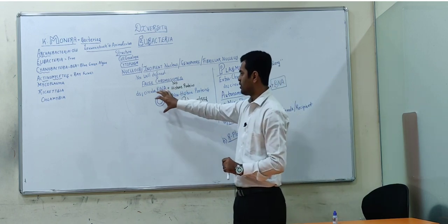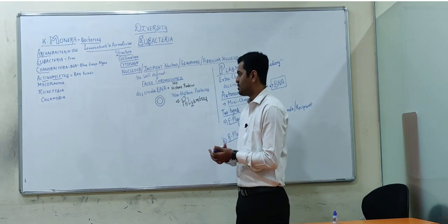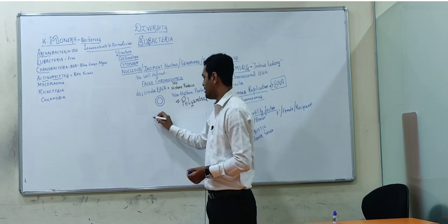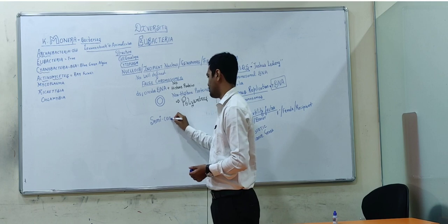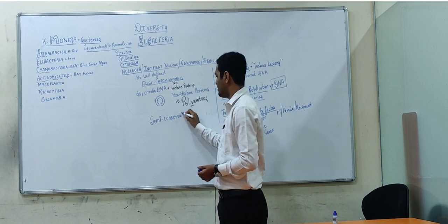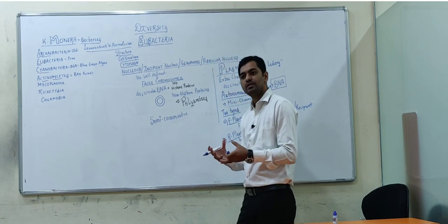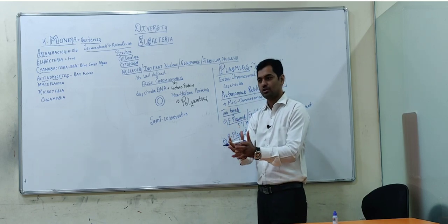The last point: this circular DNA. When there is replication, that replication is known as semi-conservative replication. Semi-conservative means 50% is parent DNA, 50% is newly constructed.